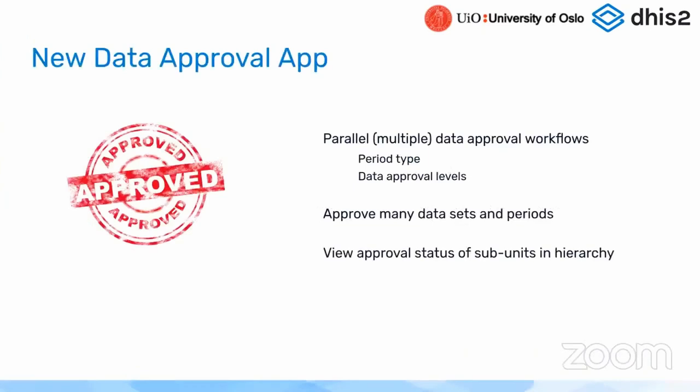Let's start with looking at the new data approval application that came out in version 2.30. In the data model we've had support for what we call parallel or multiple data approval workflows for quite some time — at least two years — but we haven't had the chance to support this in our own applications yet. It's been used by third-party applications but not our own core application.